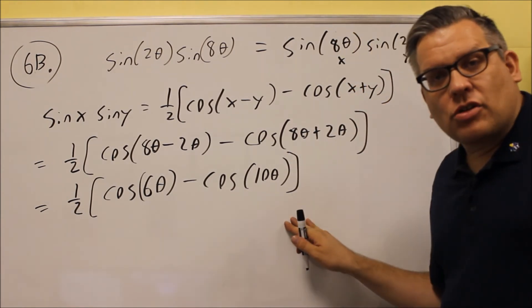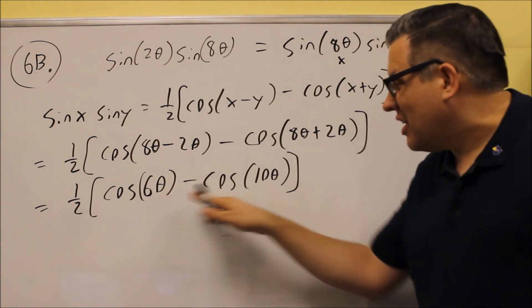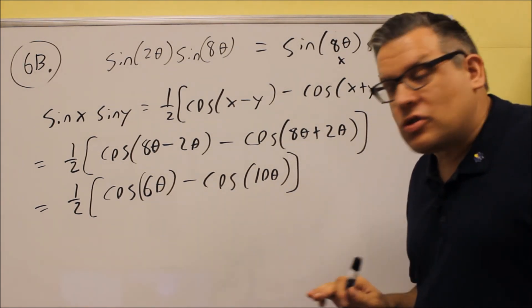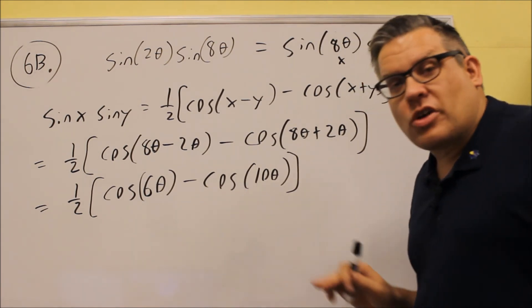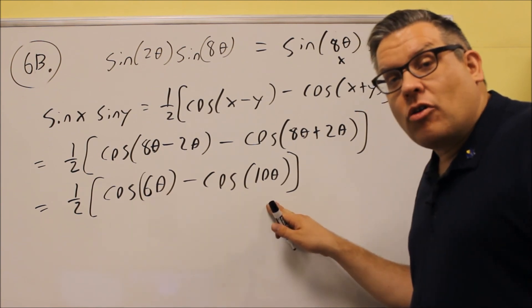But you can't do any more with this. Now these are not considered like terms, so you have a six theta and a ten theta. You're not allowed to subtract those because you have to have exactly the same angles inside in order to treat those like common factors. So this is actually as far as you need to go for 6B.